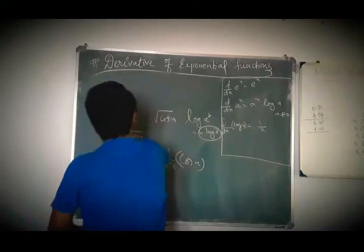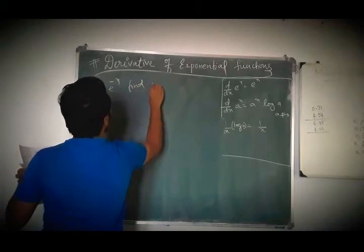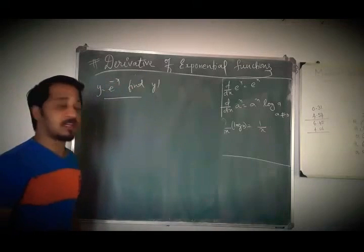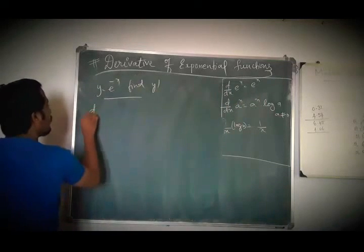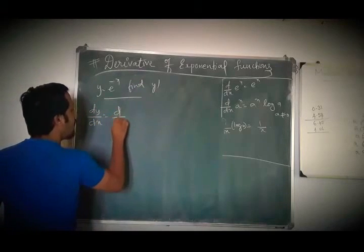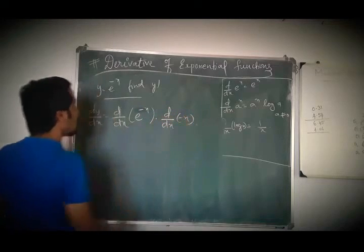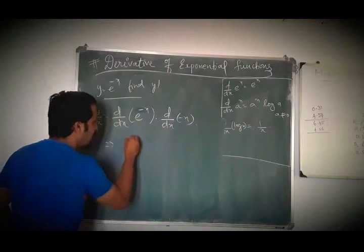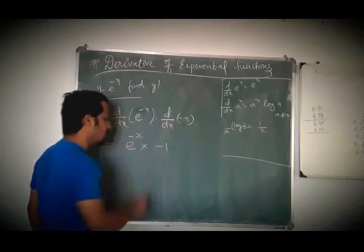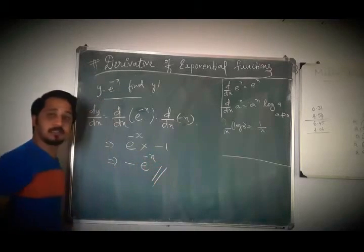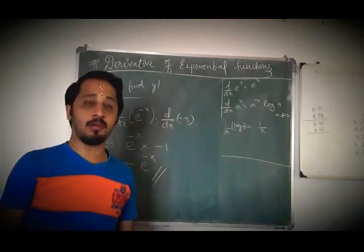y = e^(−x). We know that derivative of e^x is e^x. So dy/dx = d/dx of e^(−x). I am taking the derivative of the exponent (−x), which is −1. This implies dy/dx = −e^(−x). So, derivative of e^x is e^x, and derivative of e^(−x) is −e^(−x).